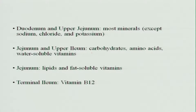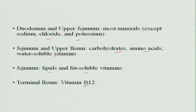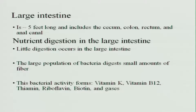In the duodenum and upper jejunum, most of the minerals except sodium, chloride, and potassium are absorbed. Carbohydrates, amino acids, and water-soluble vitamins are absorbed into the bloodstream in the jejunum and upper ileum. Lipids and fat-soluble vitamins are absorbed from the jejunum. The large intestine is the last 5 feet and includes the cecum, colon, rectum, and anal canal.